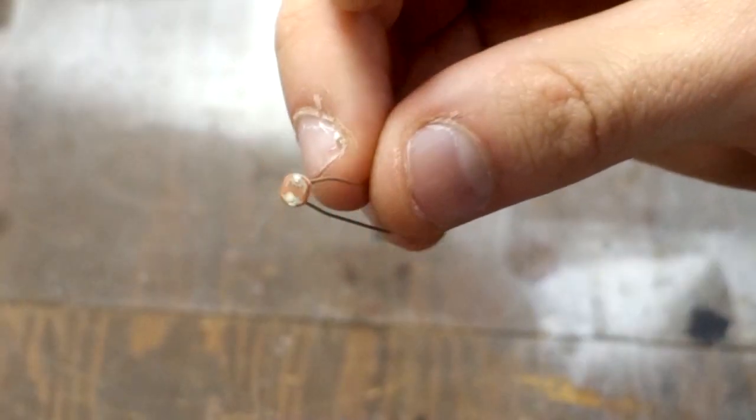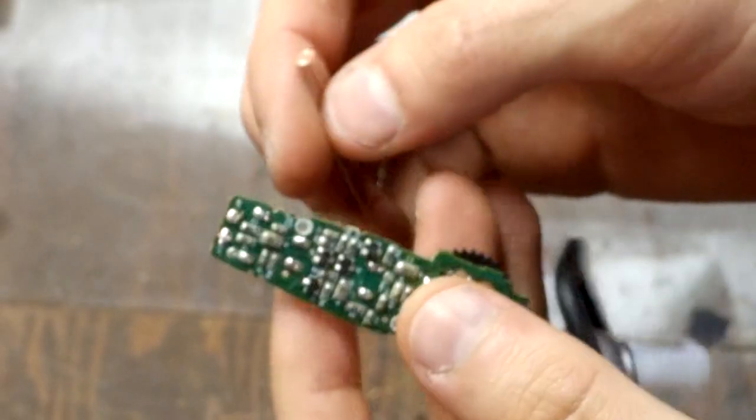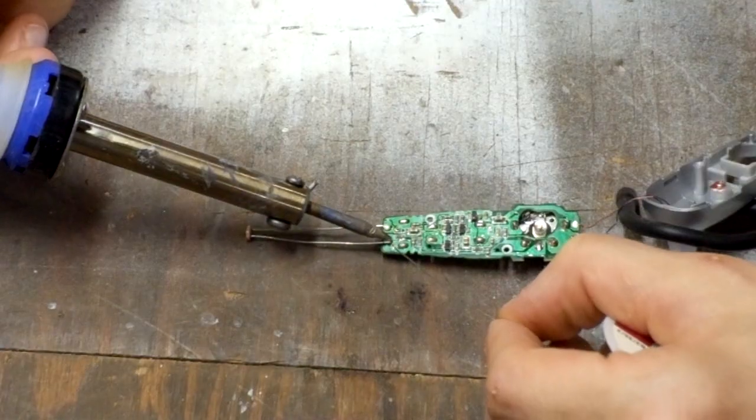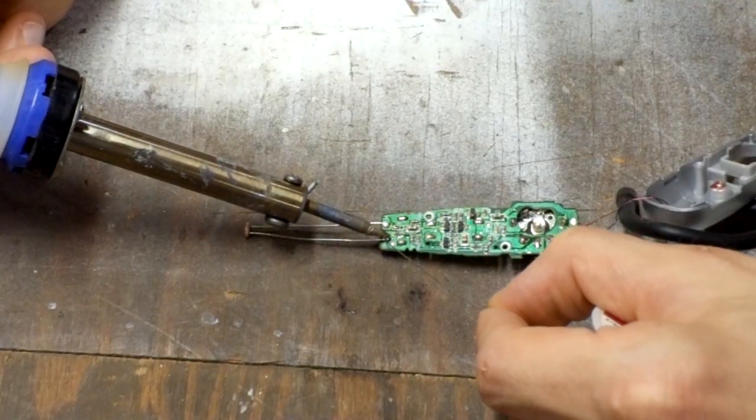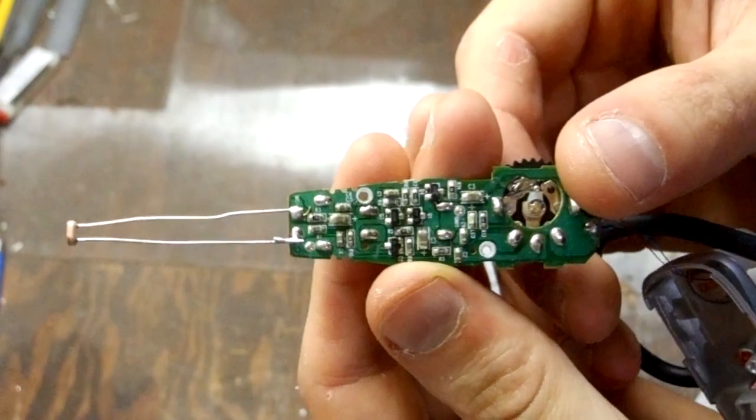Now we're going to replace the microphone with this photo cell. That'll make the circuit sense light instead of sound. We're going to put it right here and solder it right onto the same connector as the microphone came off of. So let's go ahead and solder that on, and that's what it should look like when you're done.